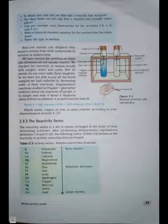Reactive metals can displace less reactive metals from their compounds in solution or molten form. We have seen in the previous sections that all metals are not equally reactive. We checked the reactivity of various metals with oxygen, water, and acid. But all metals do not react with these reagents. So we were not able to put all the metal samples we had collected in decreasing order of their reactivity. Displacement reactions studied in chapter 1 give better evidence about the reactivity of metals. It is simple and easy. If metal A displaces metal B from its solution, it is more reactive than B. Metal A + salt solution of B = salt solution of A + metal B.